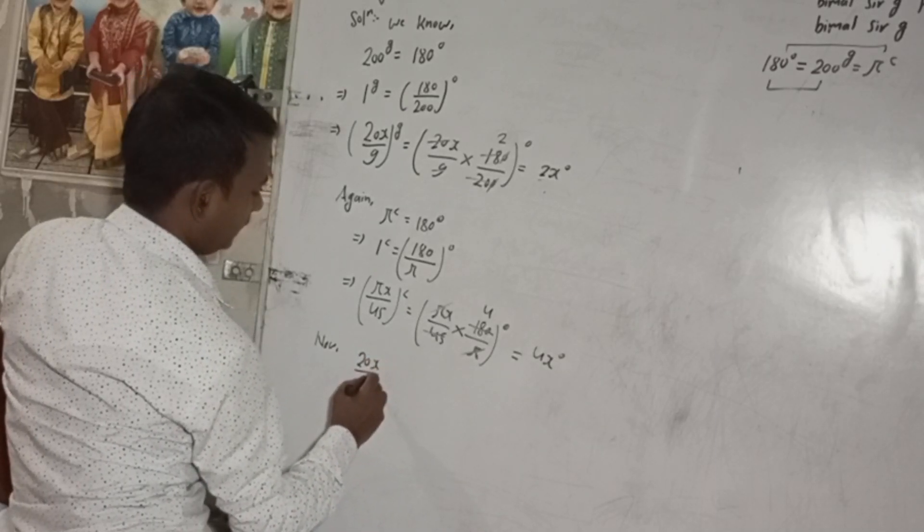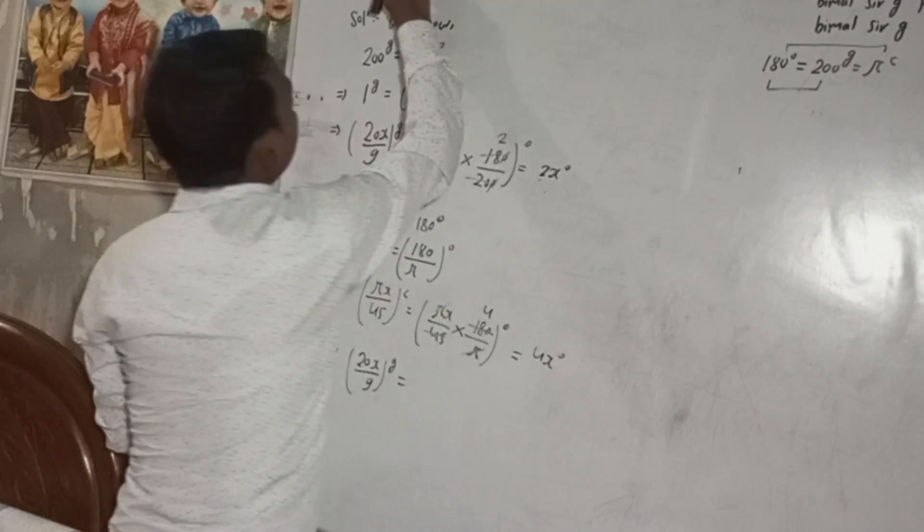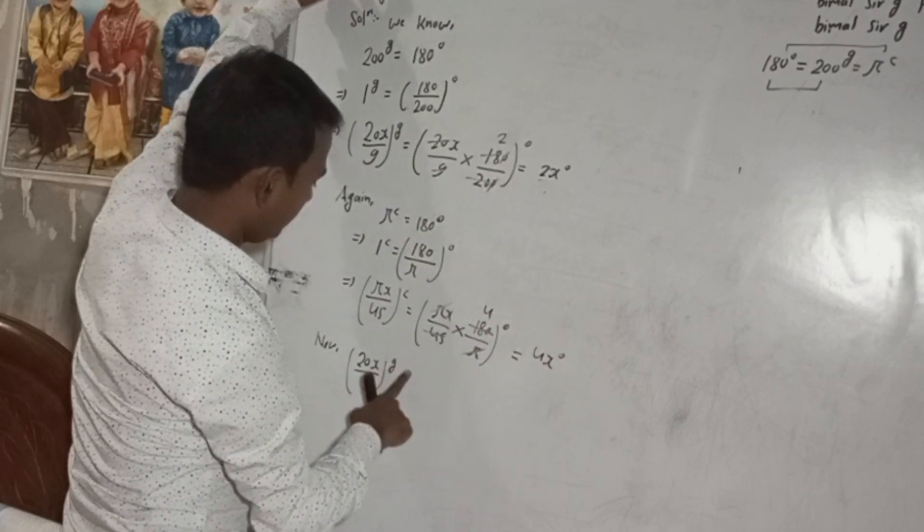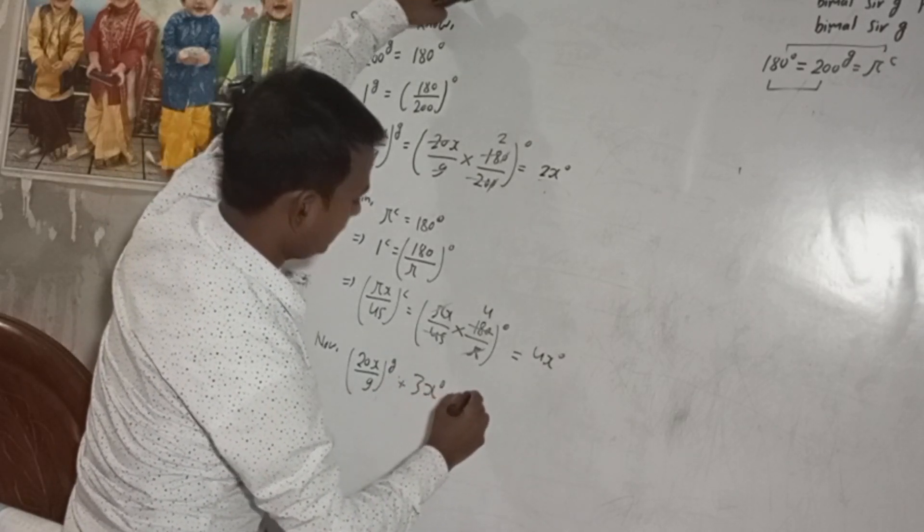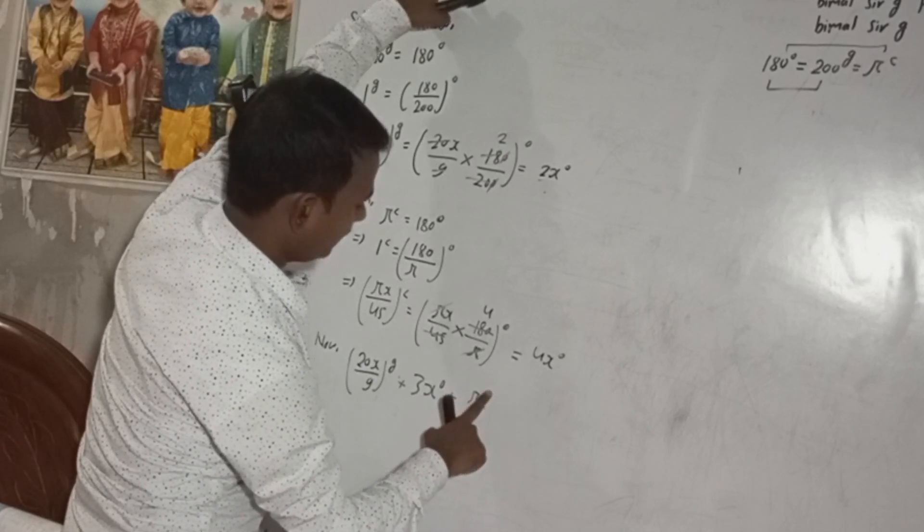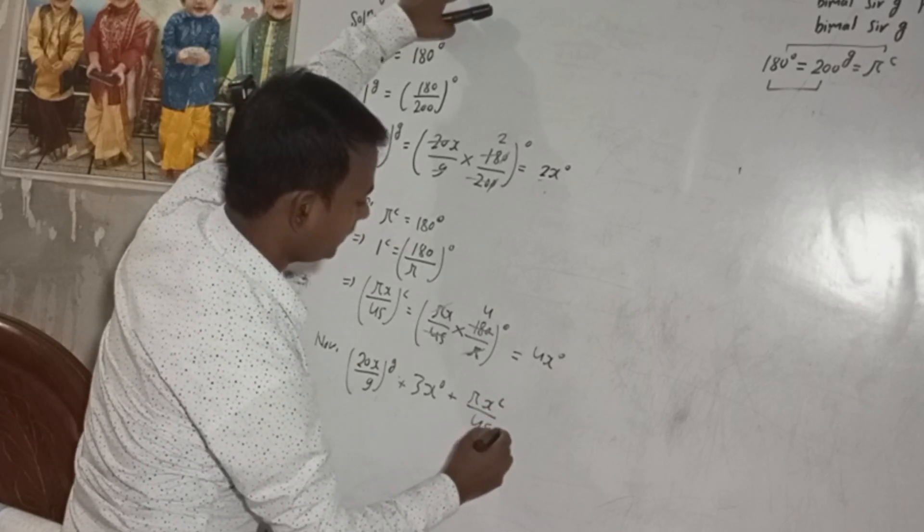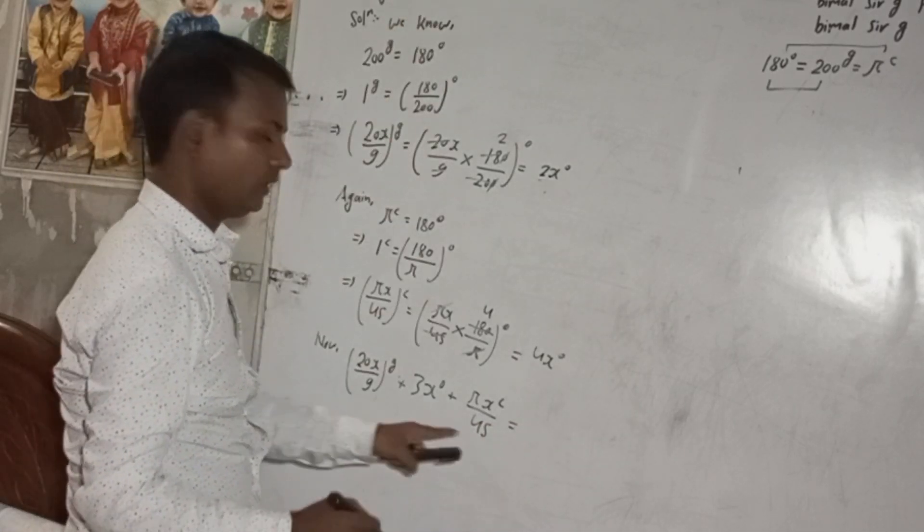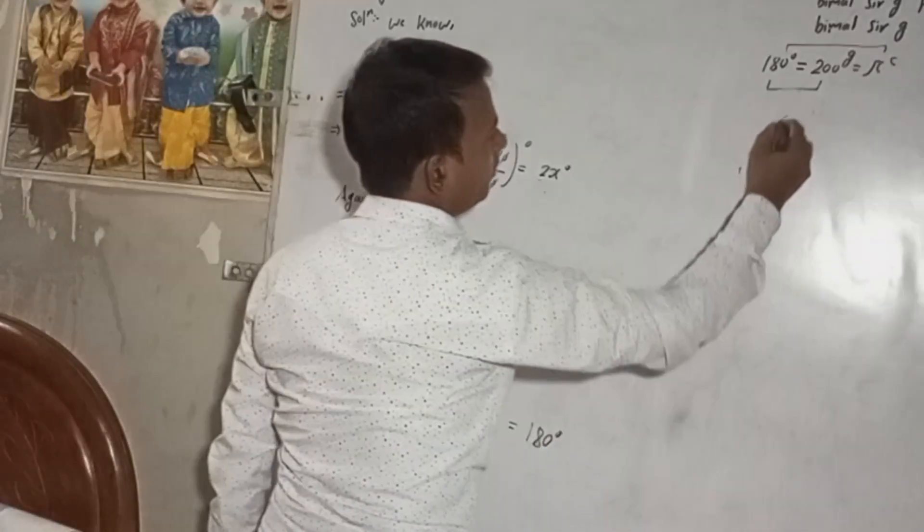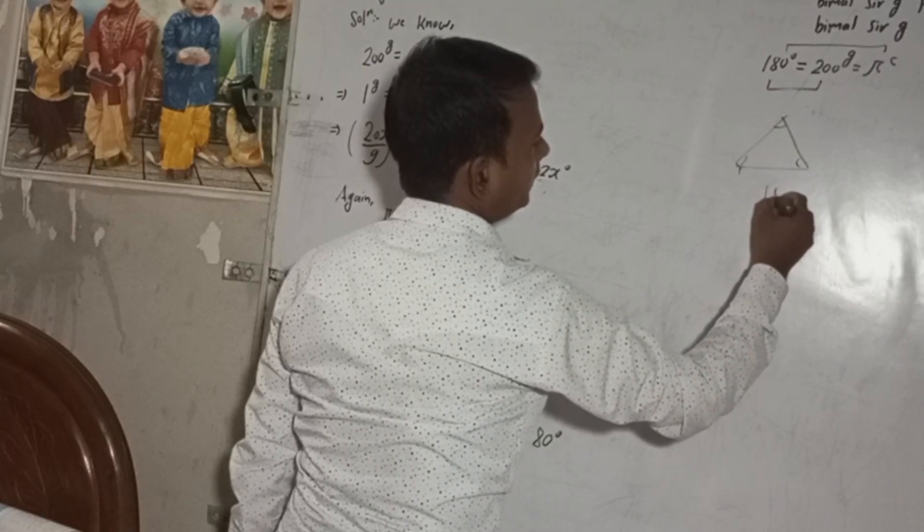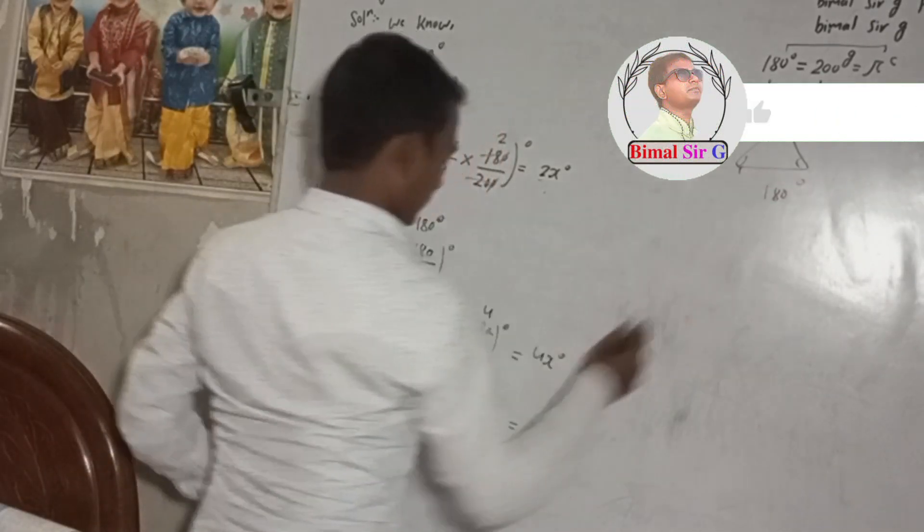So now, 20x/9 grade plus 3x degree plus πx/45 radian is equal to, this will be 180 degree, because sum of all the angles in a triangle is 180 degree.